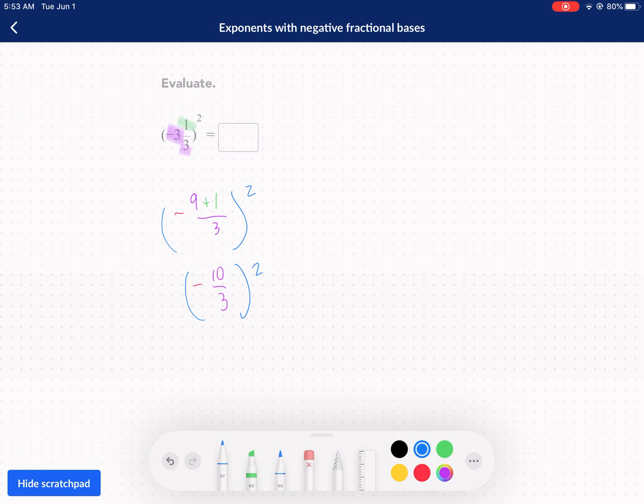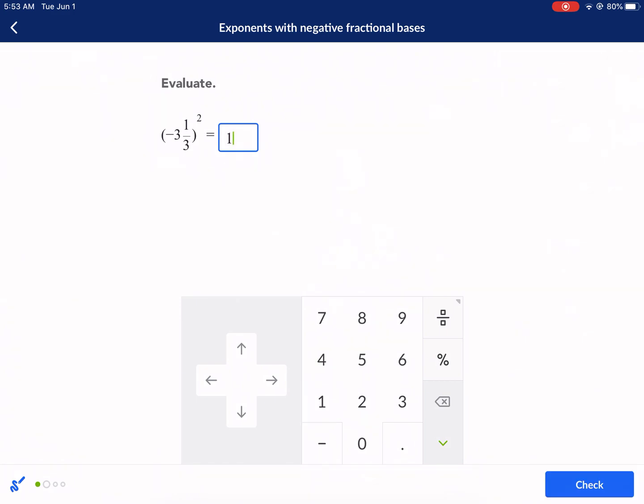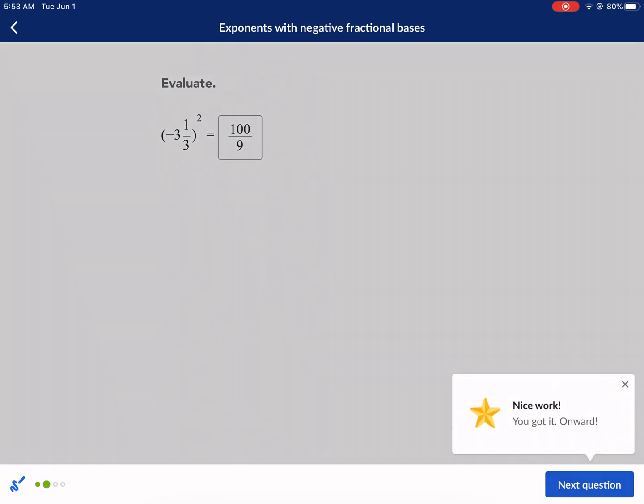And then we're squaring this. Now we just need to square negative 10 and positive 3. That gives us 100 over 9. So that should be our answer. Always put the fraction first. 100 over 9. Check it. Nice question.